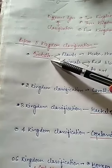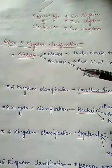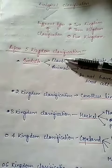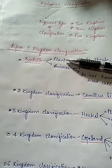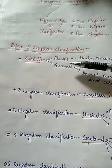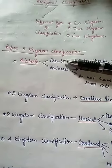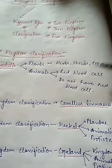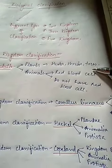Aristotle divided the whole of organisms into two kingdoms: plants and animals. In the case of plants, he divided them into three categories — herbs, shrubs, and trees.